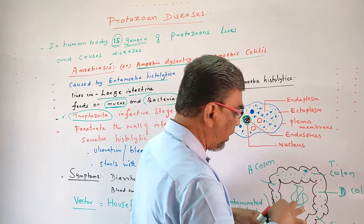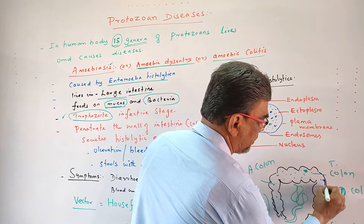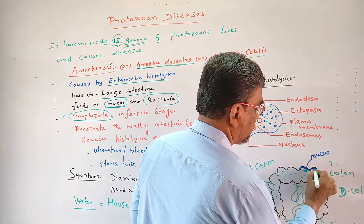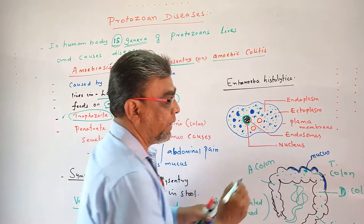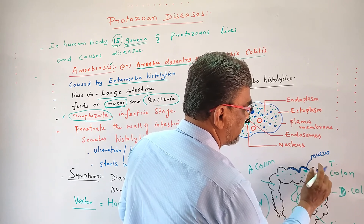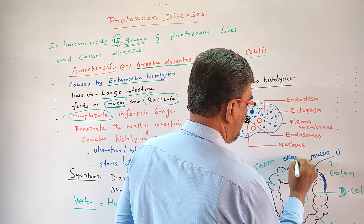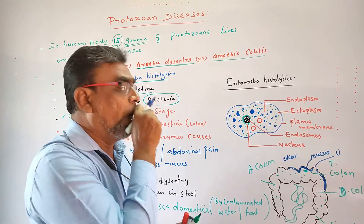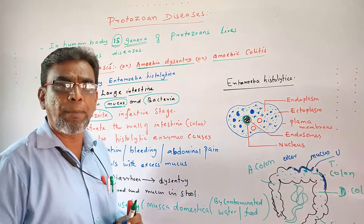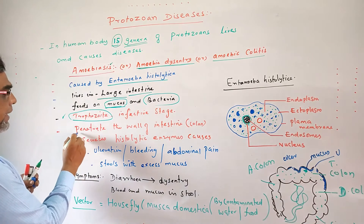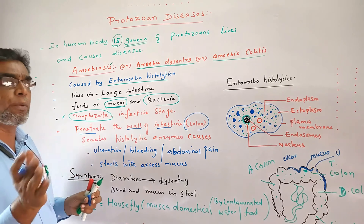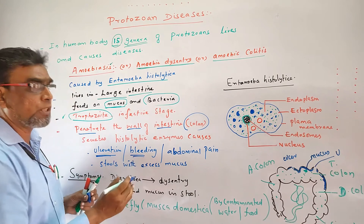It penetrates the walls of the intestine, where mucus is present. It eats the mucus and some bacteria present in the large intestine. When the mucus is removed, ulcer formation takes place. When ulcer formation takes place, bleeding also occurs. Because of the ulcer and bleeding, abdominal pain may occur. The removal of mucus causes ulceration, which causes bleeding and abdominal pain.